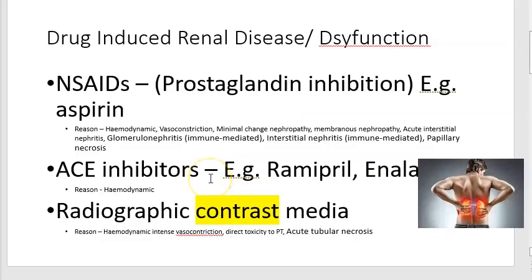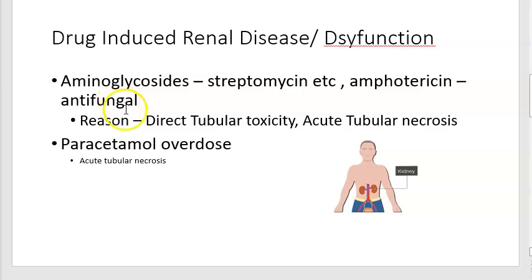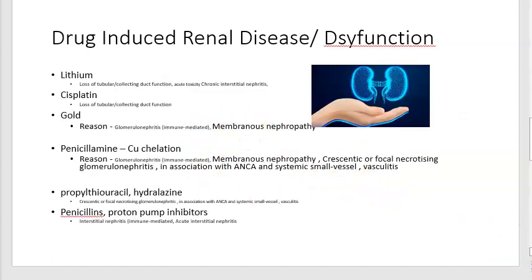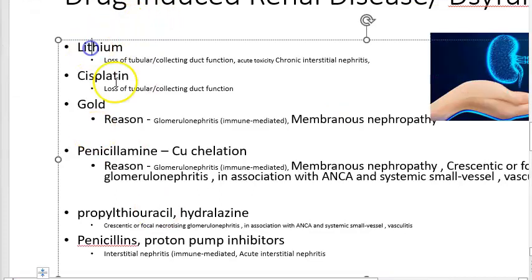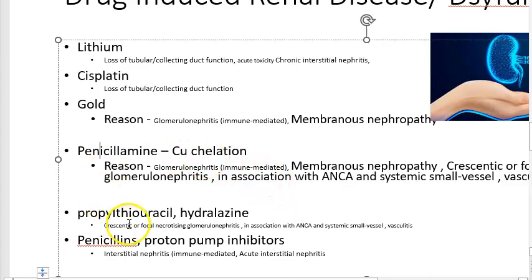Aminoglycosides like streptomycin and amphotericin cause tubular toxicity — tubular necrosis. Paracetamol overdose hurts both the liver and kidney. Lithium also causes direct tubular toxicity. Cisplatin also affects the tubules. Gold causes glomerulonephritis and membranous nephropathy. Penicillamine again causes glomerulonephritis and nephritis.